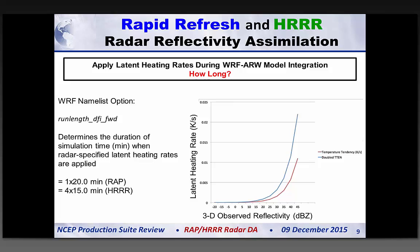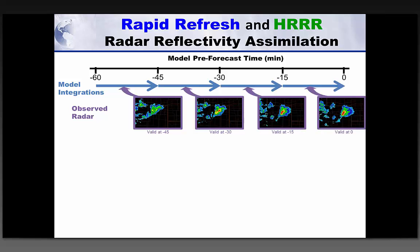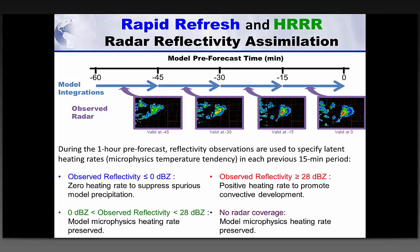How long do we apply it? About 20 minutes in the Rapid Refresh during forward model integration for filtering, and four times over 15-minute periods in the HRRR — one hour total. With the HRRR, we make a snapshot of radar data at the end of each 15-minute period and project that latent heating into the 15 minutes ending at that time. The idea is that radar reflectivity observations are a trailing indicator of where heating processes took place.